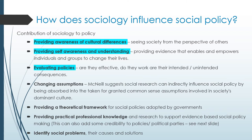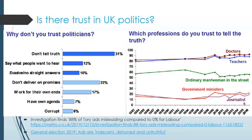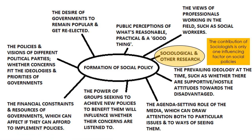Sociology can identify the problems, causes, and solutions to issues in society. However, whether this information is adopted by government is a very different argument. Two images here show there isn't really much trust in politics and politicians — many feel that the government doesn't do what it says. The most trusted professions tend to be doctors and teachers, and people generally do not trust politicians.